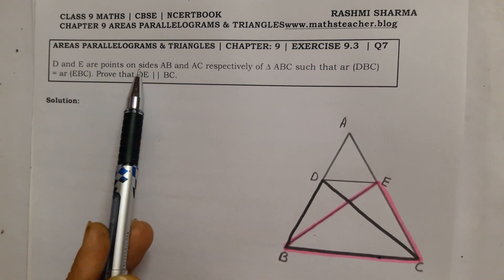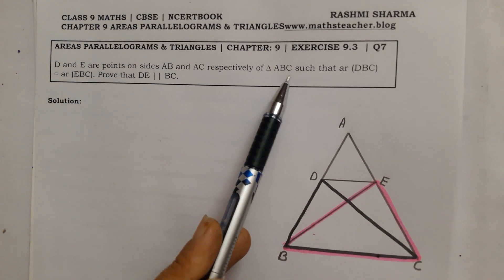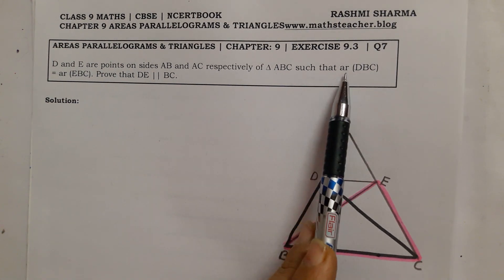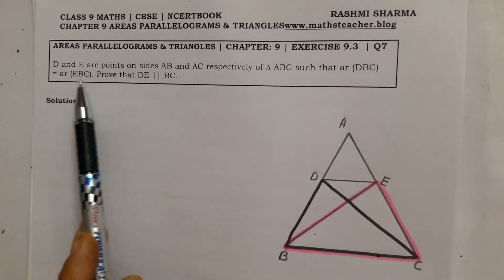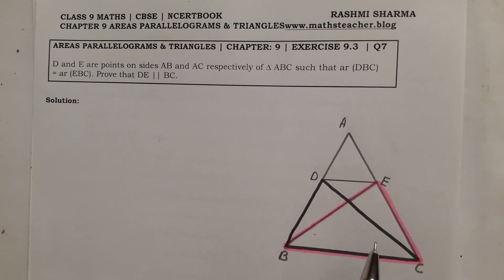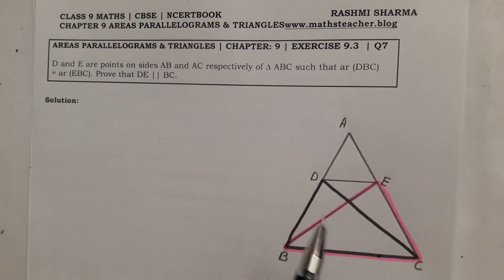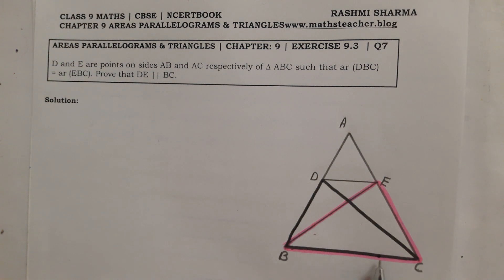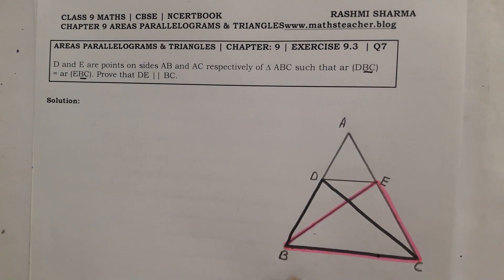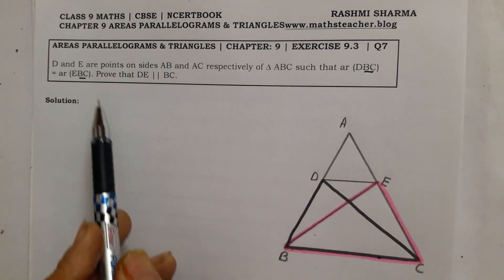D and E are points on sides AB and AC respectively of triangle ABC. Such that area of triangle DBC equals area of triangle EBC. I have highlighted DBC with a black color border and EBC with a pink border so you can easily see that the areas are equal. We have to prove that DE is parallel to BC. Both triangles share the same base BC and have equal areas.